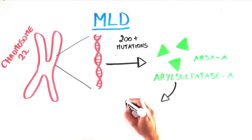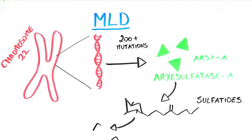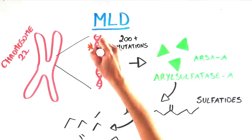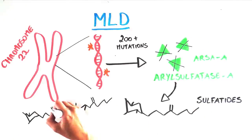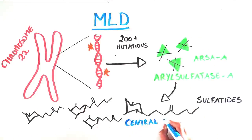This enzyme breaks down sulfatides, a normal byproduct of cell life. When ARSA is mutated, sulfatides accumulate throughout the body, especially in the central and peripheral nervous systems,